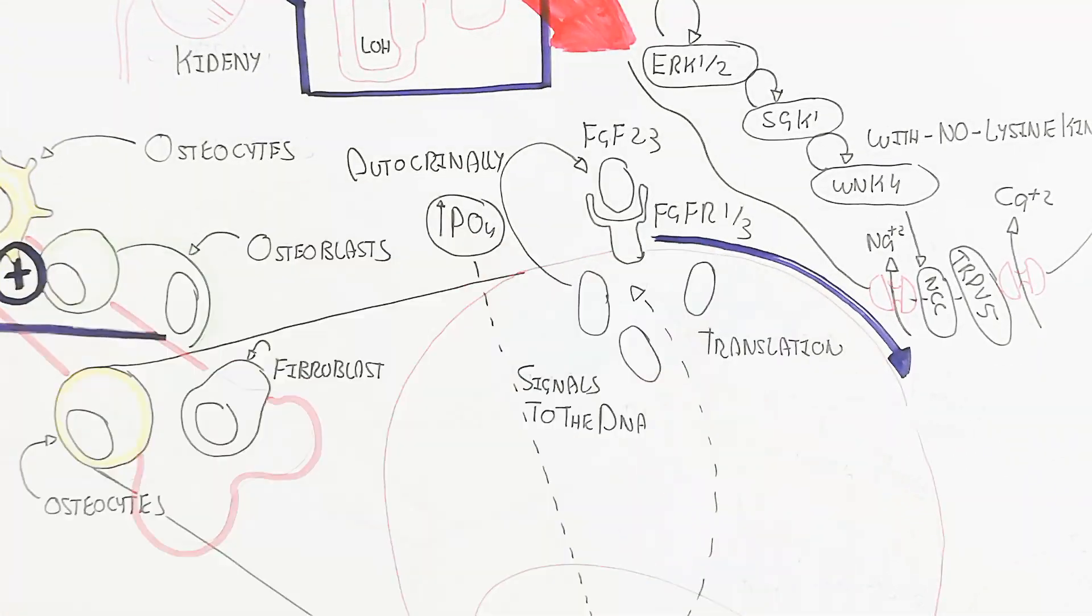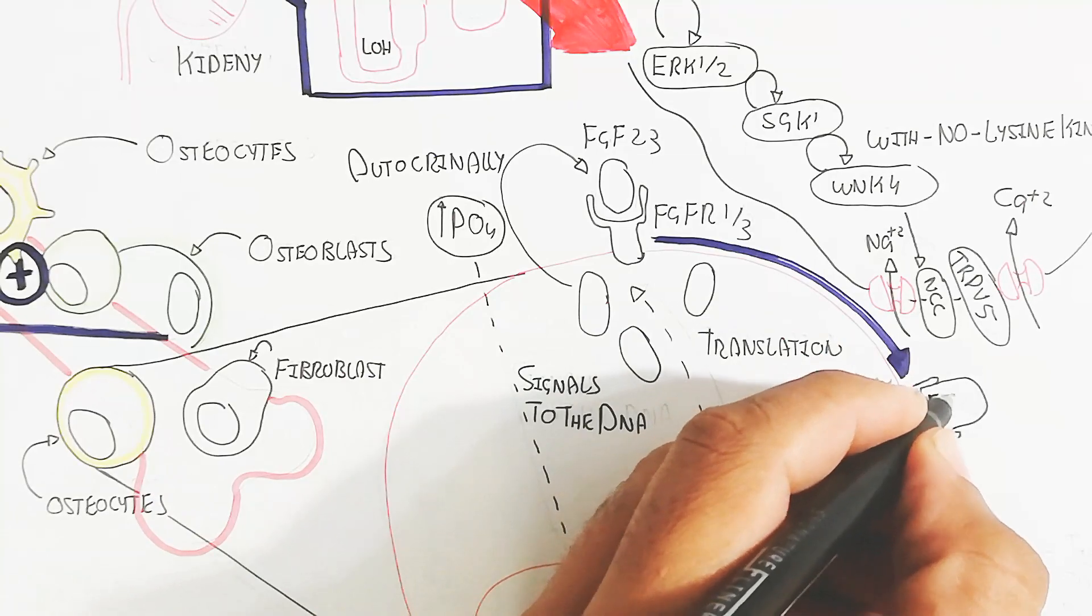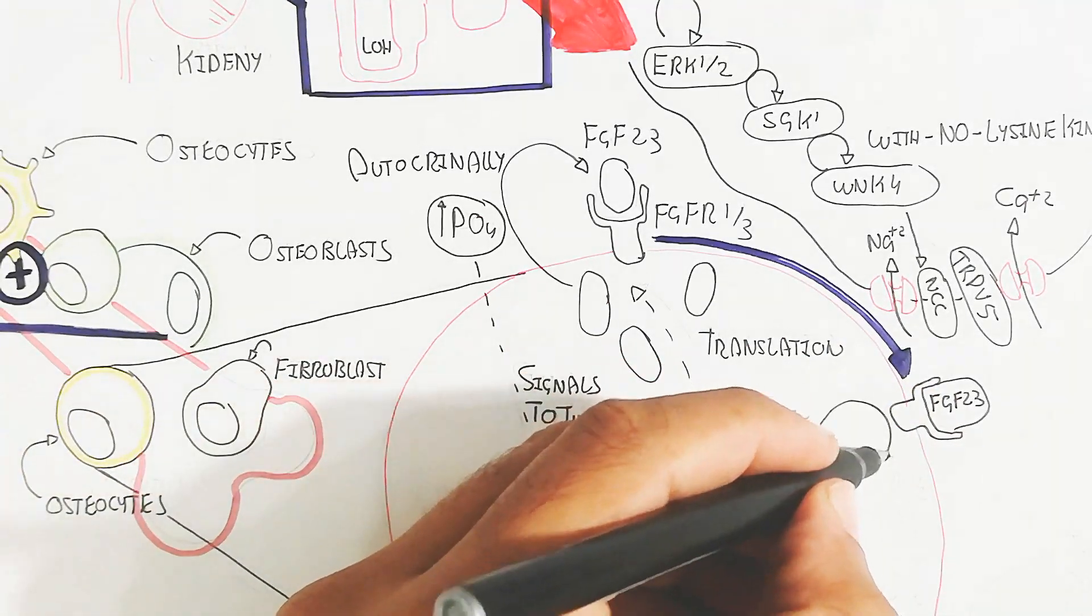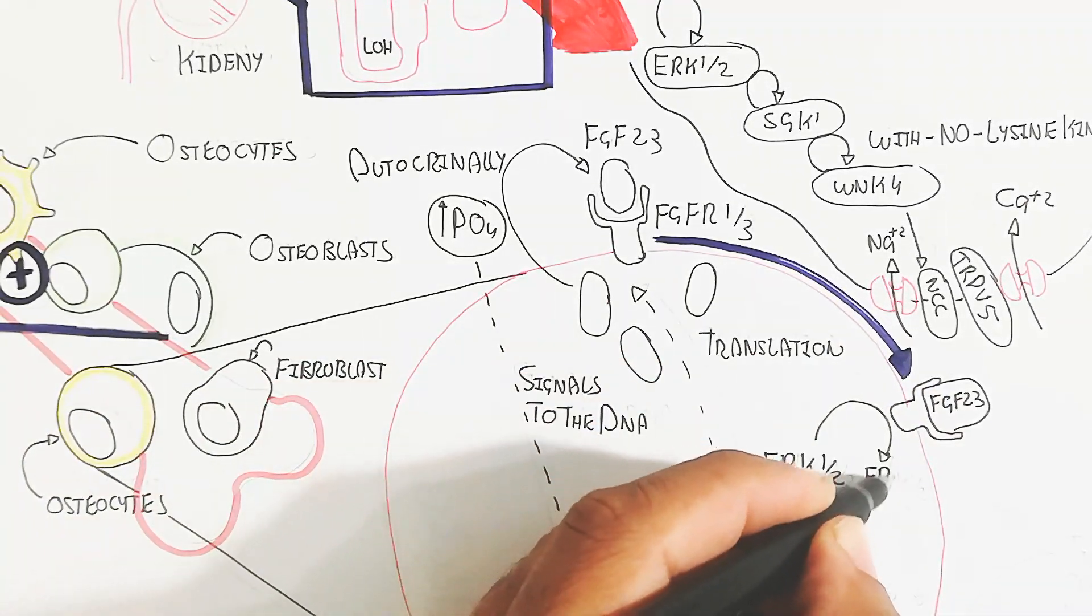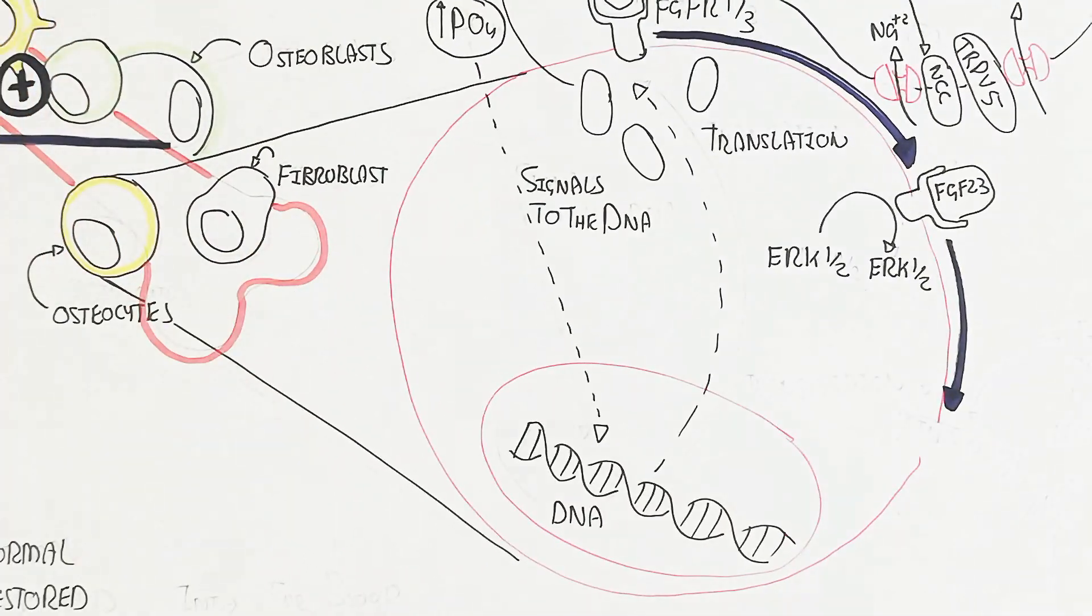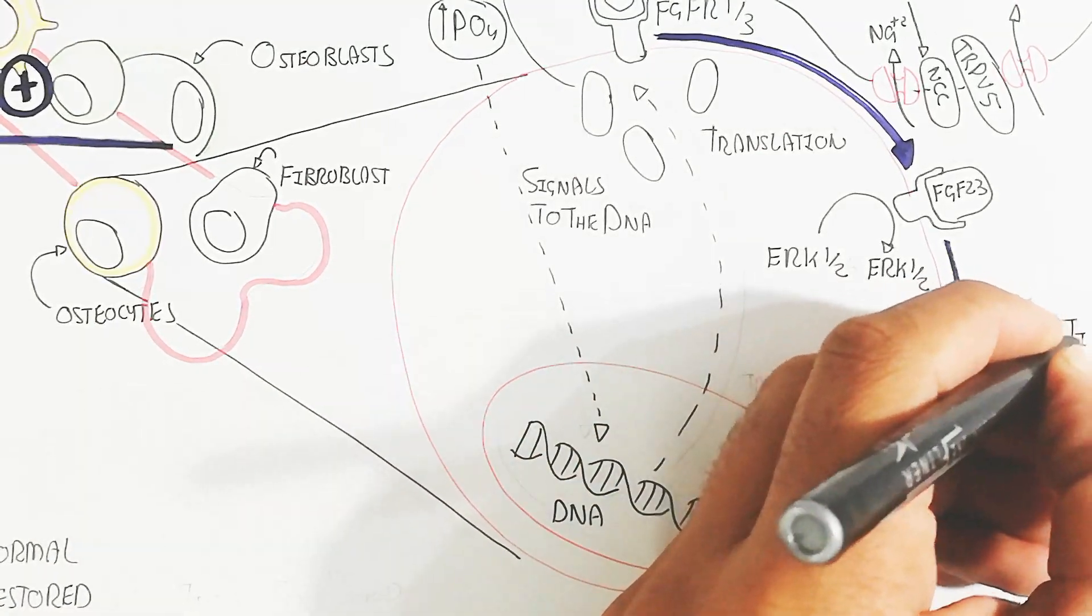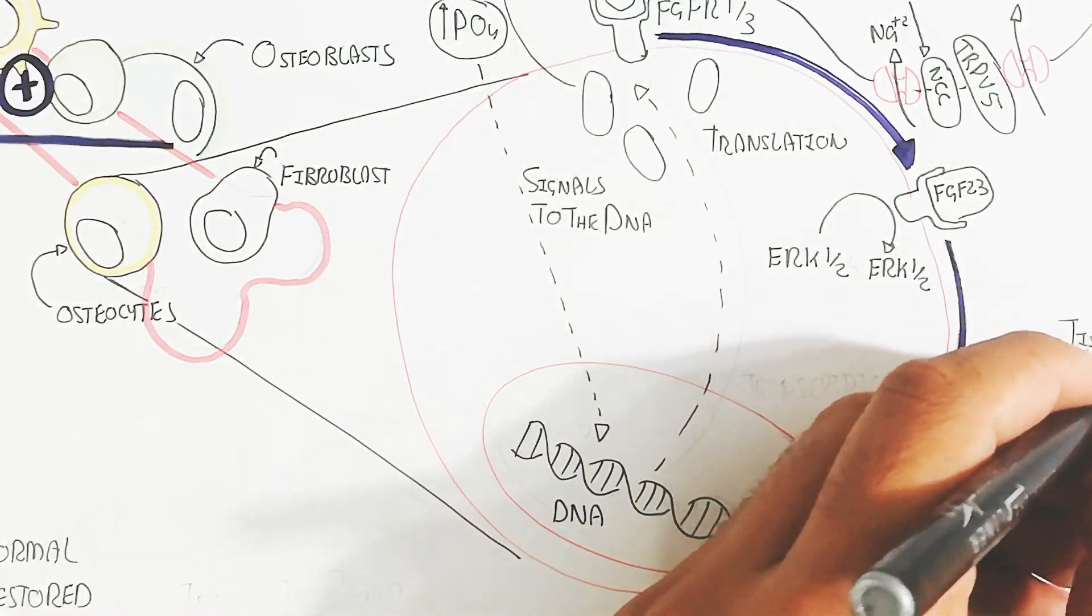FGF23 will autocrinally bind with the FGF receptor 1 and 3, which will lead FGF23 to trigger the ERK1 and 2 activation to the tissue non-specific alkaline phosphatase activation. This will lead to pyrophosphate conversion into simple phosphate group. This simple phosphate group is able to mineralize.